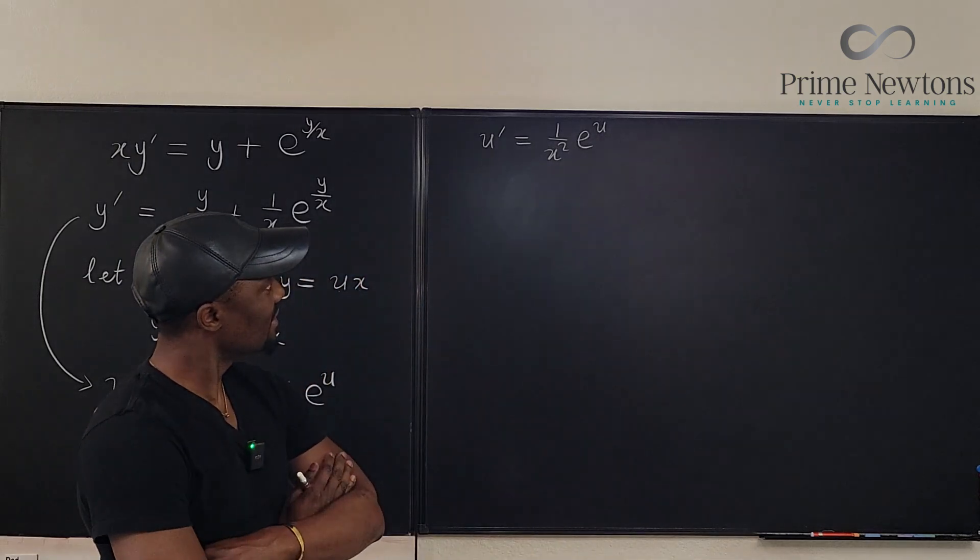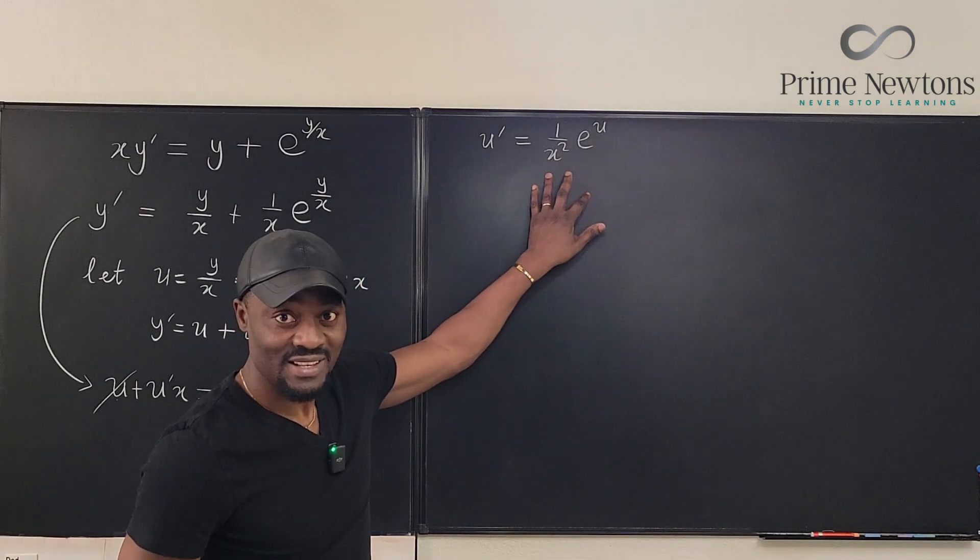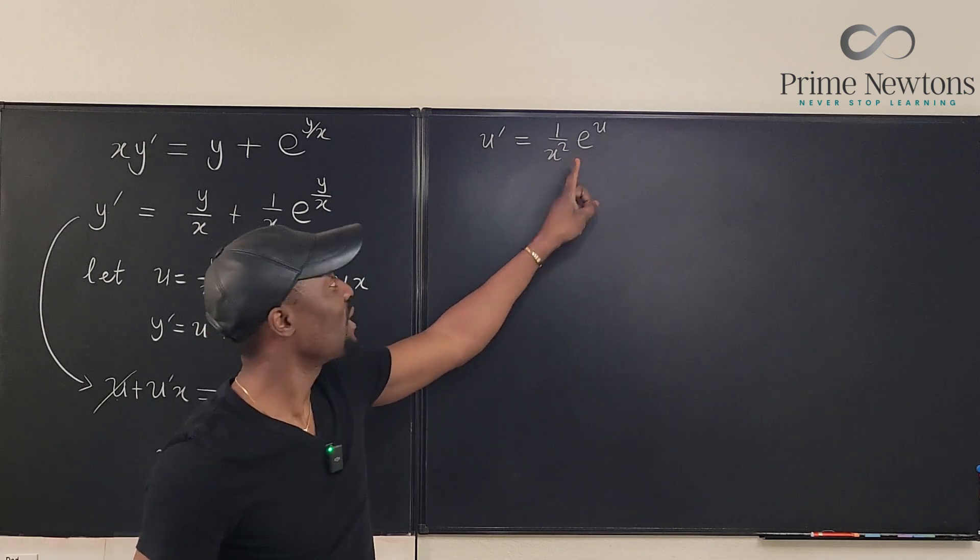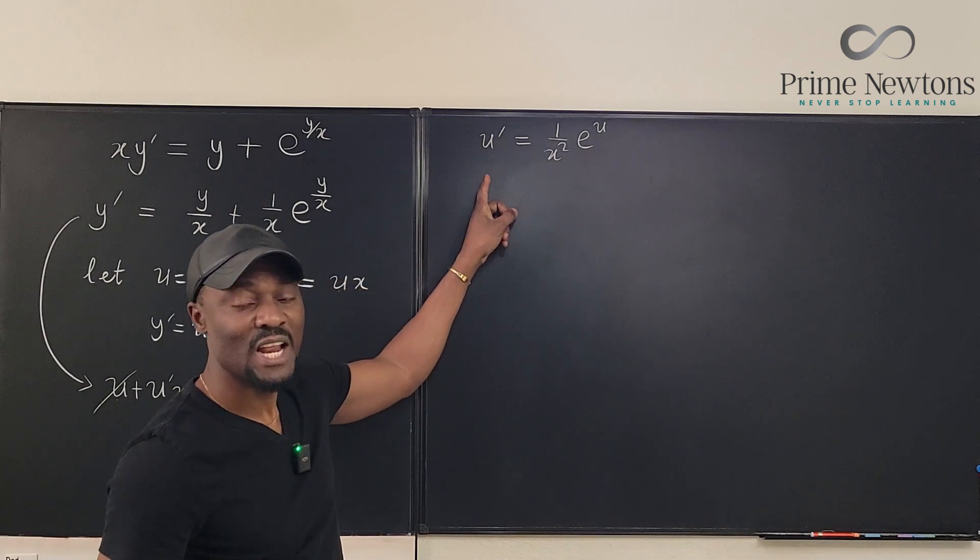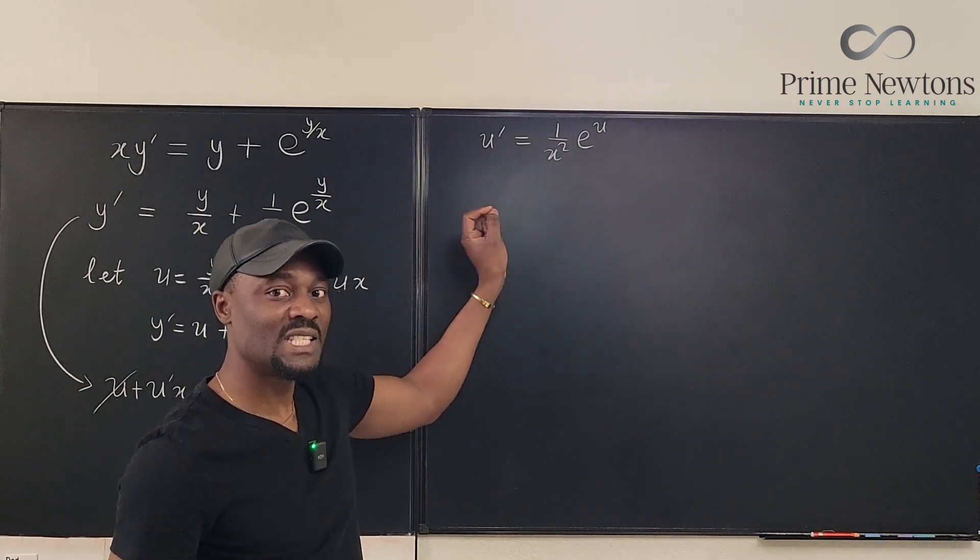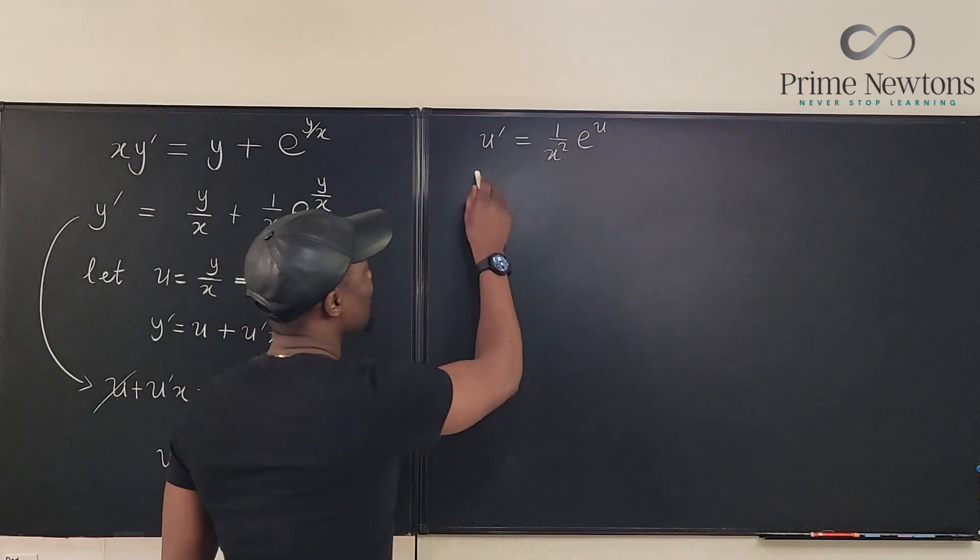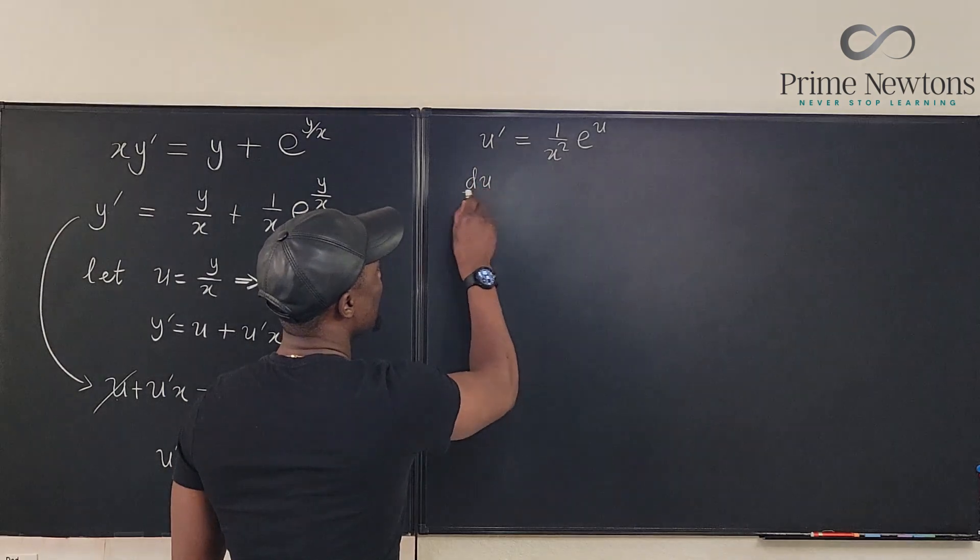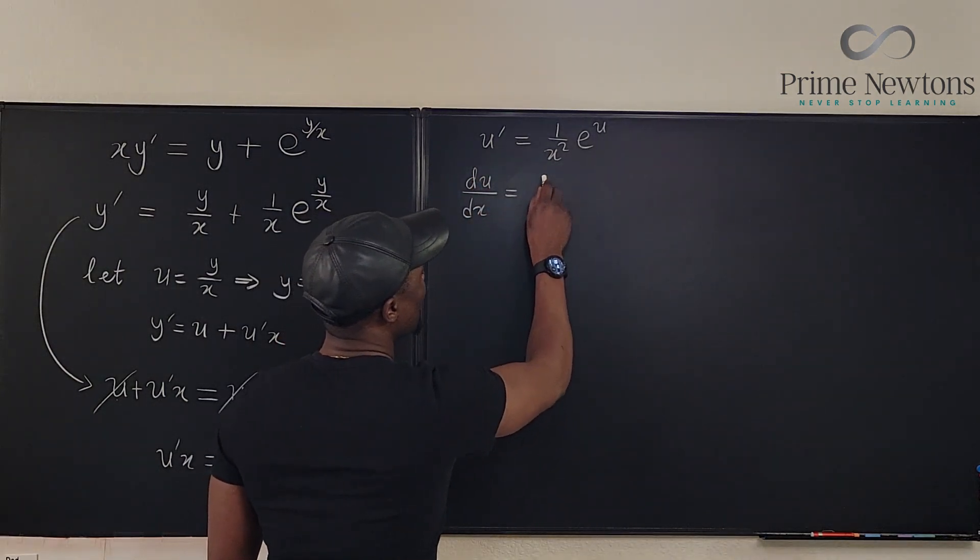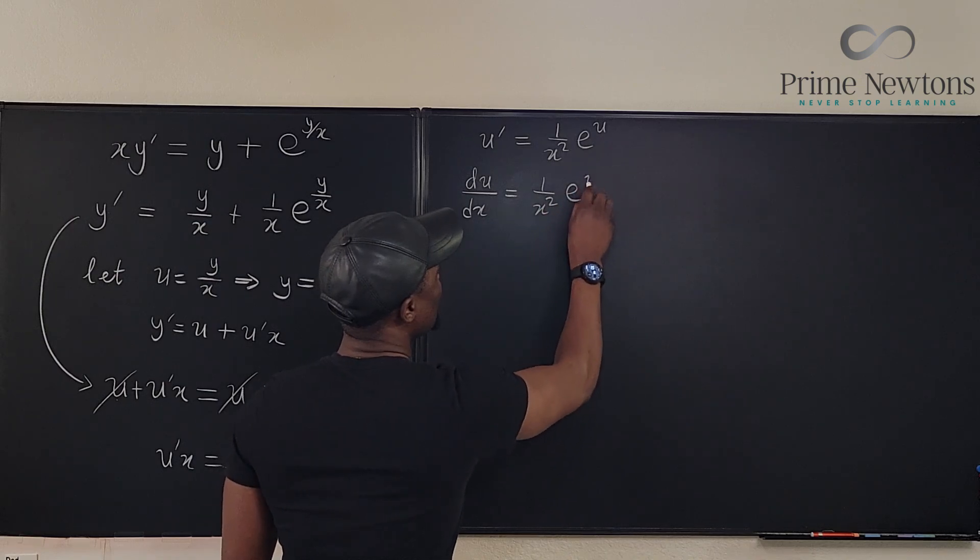Nice. Now once you have this, this clearly looks like a separable differential equation because you can move this to this side. But before you do that you want to rewrite whatever this is as du dx. It's better. So we have du dx will be equal to one over x squared e to the u.